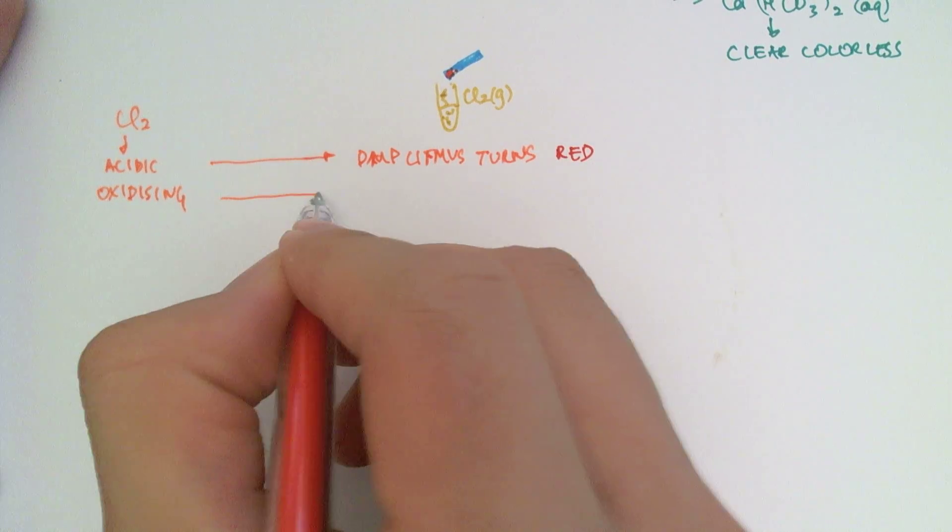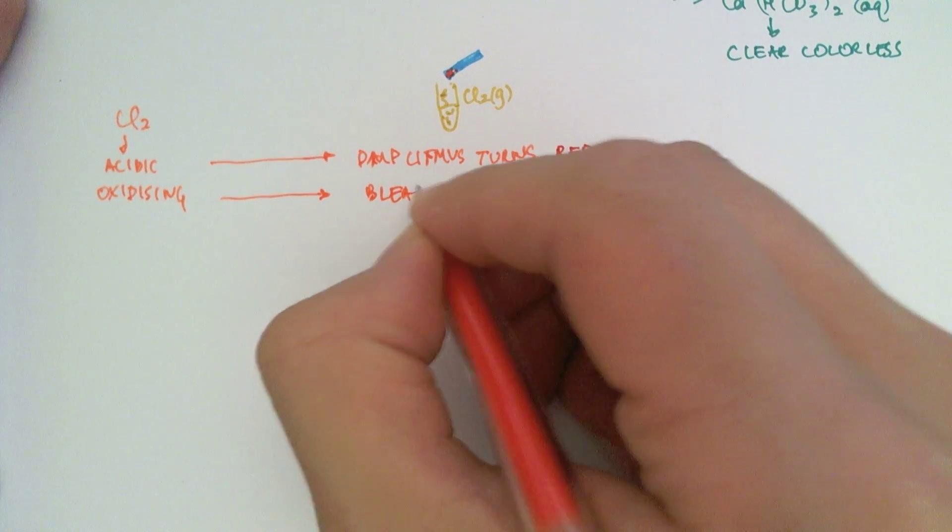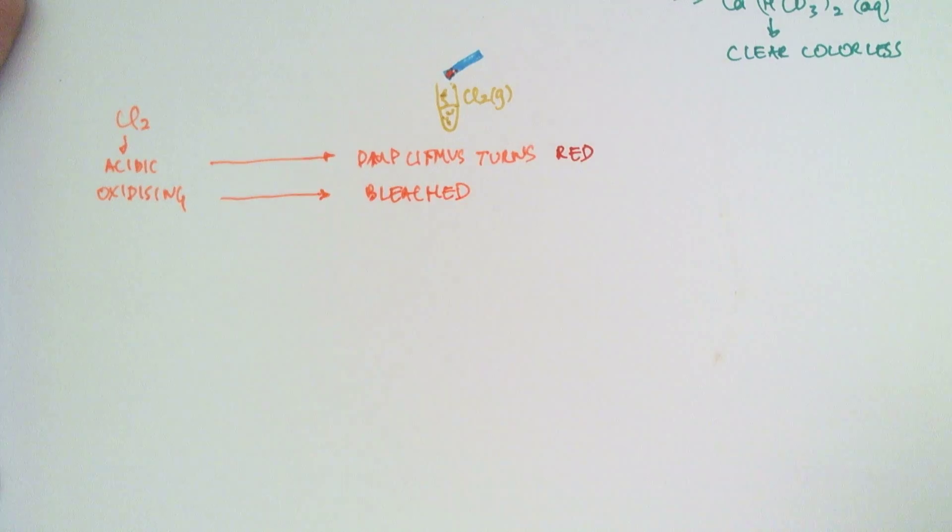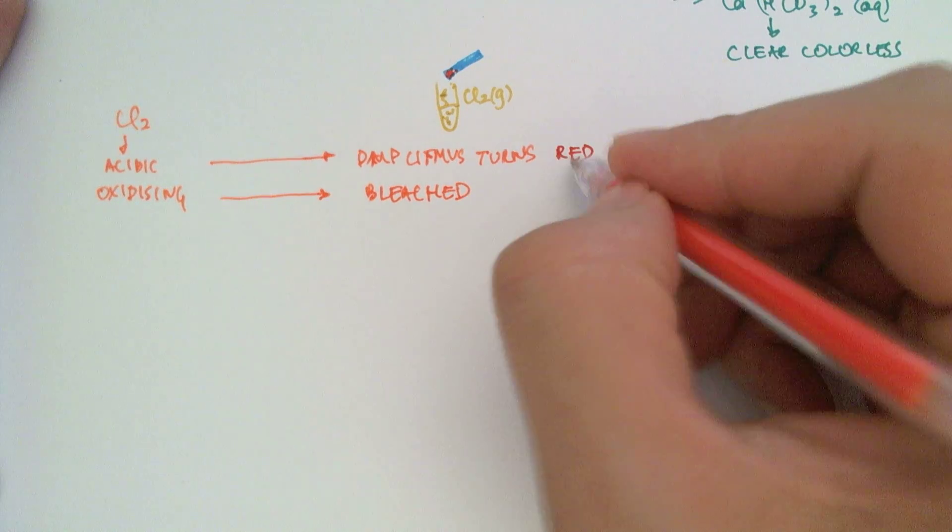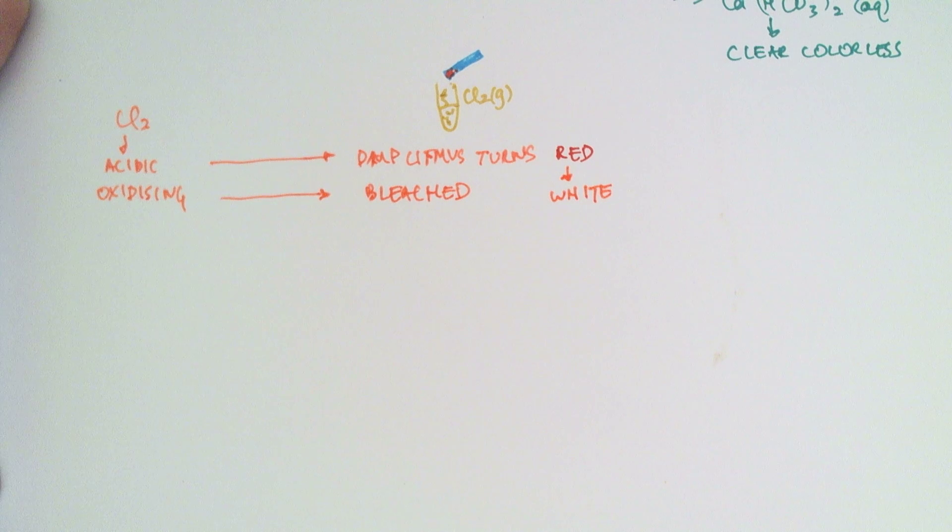And because it's oxidizing, the litmus paper will subsequently get bleached. So what you'll see is it's going to turn red and then it will turn white because it got bleached in excess chlorine.